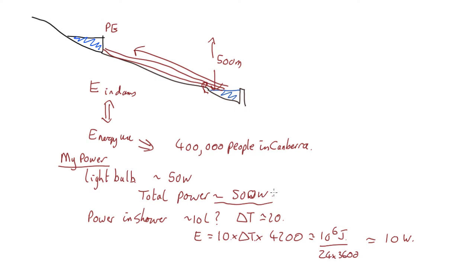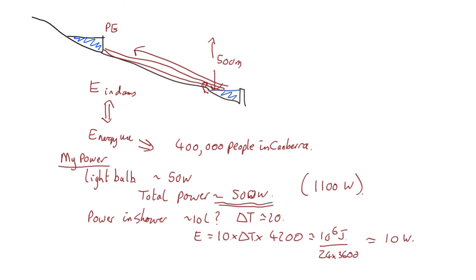You've also got to factor in the electricity you use in work. Some people will have factories and so on. It actually turns out, if you look it up, the average electricity consumption is slightly more than that. It's about 1100 watts on average day and night for the typical Australian. But we'll use something like that. For ninja physics purposes, this is quite accurate enough.